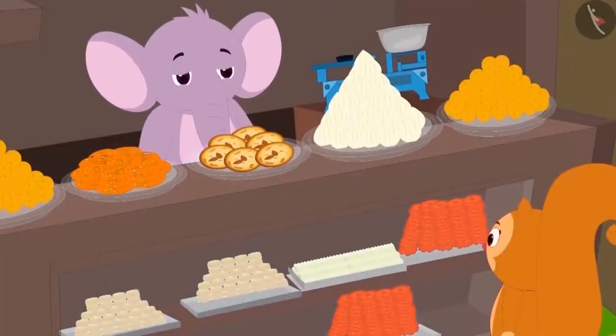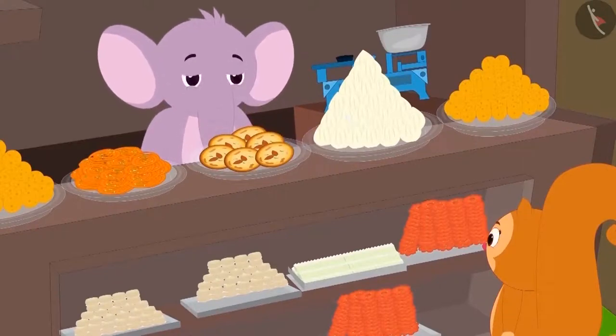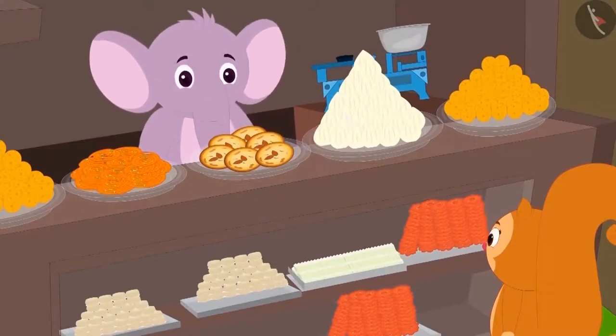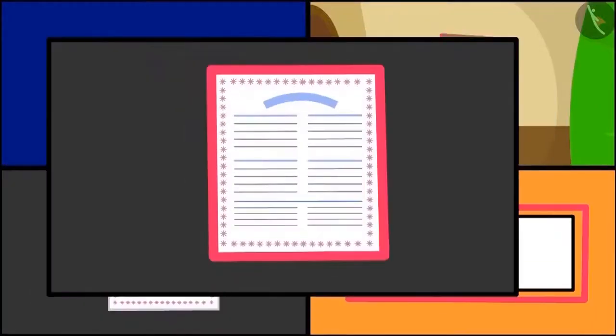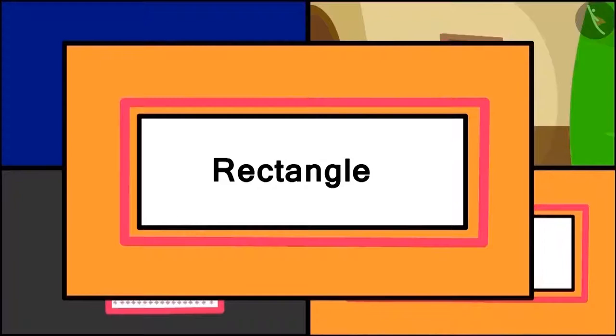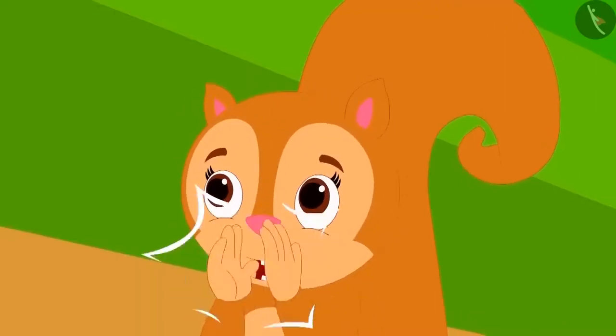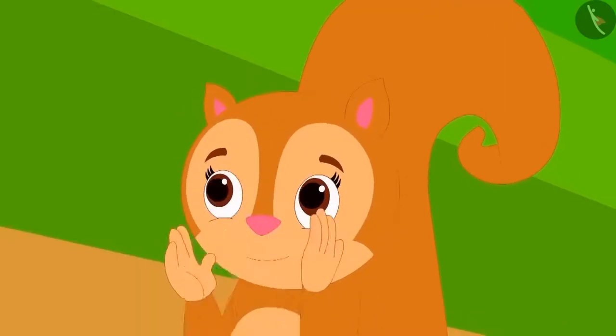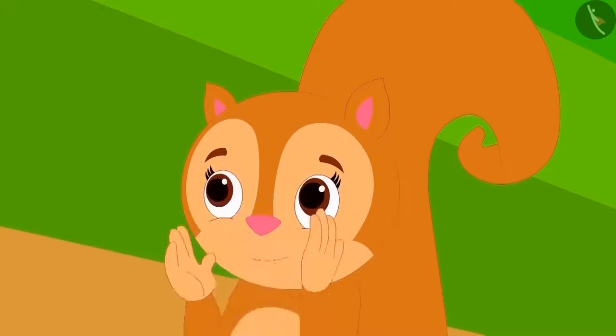Now Appu explains to Chanda through a poem. Where all can she see a rectangle shape? This barfi is like a rectangle. Door is a rectangle and same is a page. Rectangle is the name of the shape and it has four sides. Chanda liked Appu's poem so much that she started clapping. Children, why don't we also clap for Appu's poem?